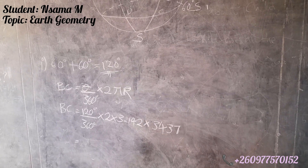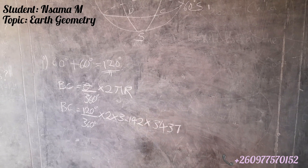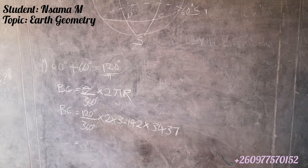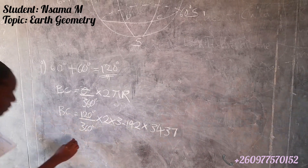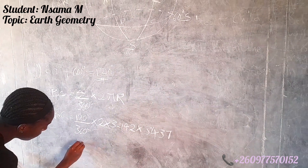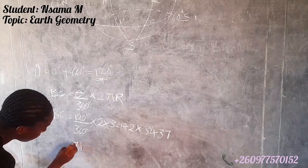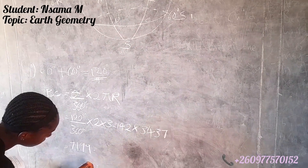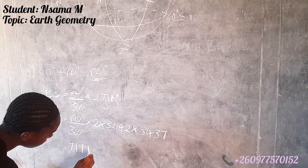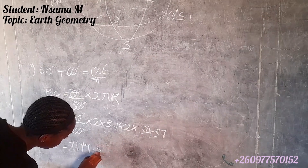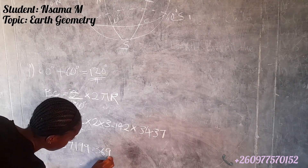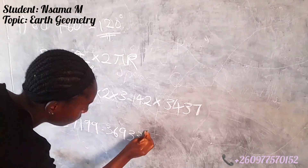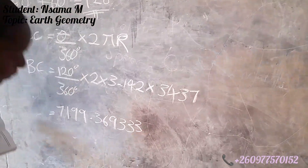When we calculate, what is it giving us? 577.199 point 3693 repeating — approximately 577.19...